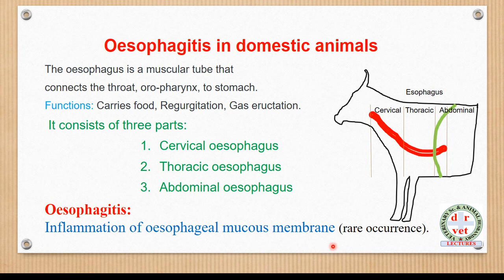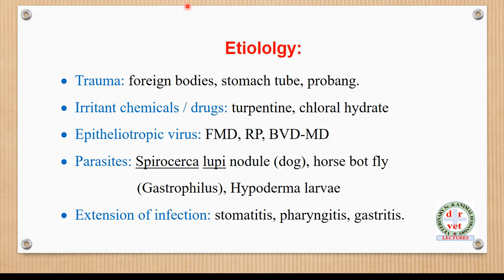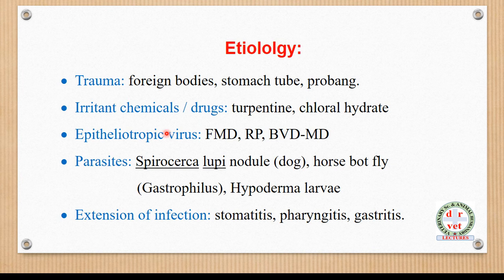Esophagitis is inflammation of the esophageal mucous membrane. This disease occurs very rarely. The etiology includes trauma to the mucous membrane by foreign bodies, while introducing a stomach tube or probe. Some irritant drugs such as turpentine, used for treatment of bloat, and chloral hydrate, used for sedation in animals, should be handled with care. Some epitheliotropic viruses are important, including foot and mouth disease, rinderpest, and bovine viral diarrhea.